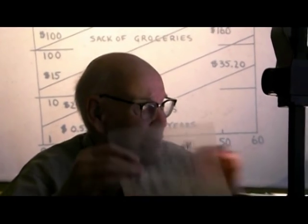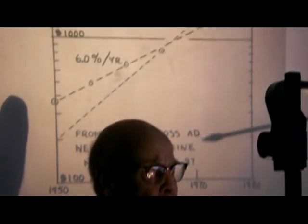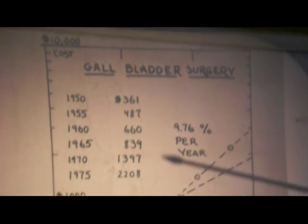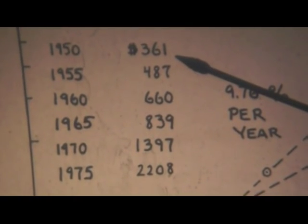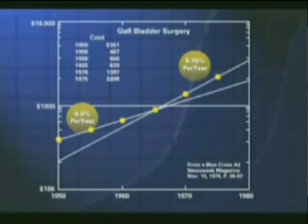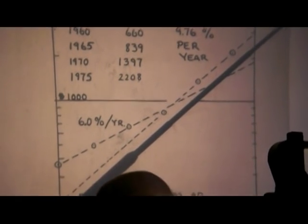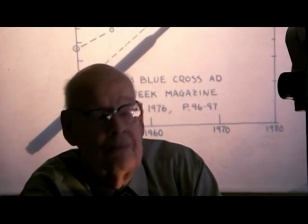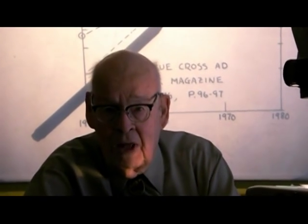I gave students data from a Blue Cross Blue Shield ad in Newsweek showing cost escalation of gallbladder surgery since 1950, when that surgery cost $361. Students made a semi-logarithmic plot and found the first four points lined up on a straight line indicating 6% inflation per year, while the fourth, fifth, and sixth were on a steeper line of almost 10% inflation per year. Running that steeper line out to the year 2000, the estimated cost of gallbladder surgery would be $25,000. The lesson is clear: if you're thinking about gallbladder surgery, do it now.